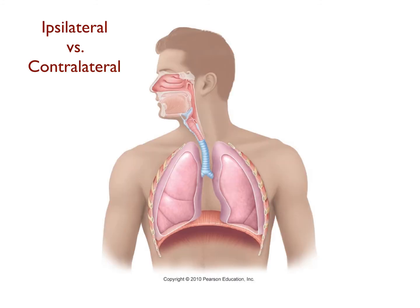The last two terms on the list are two which most of you have probably never heard before. Those terms are ipsilateral and contralateral. Remember we used the term lateral to describe structures that lie toward the side of the body, away from the midline. The terms ipsilateral and contralateral describe structures that lie either on the same side of the midline or on opposite sides of the midline. For example, the right and left lungs are on opposite sides of the midline and are consequently referred to as contralateral. The left lung and the left arm, however, are on the same side of the midline and are therefore ipsilateral.